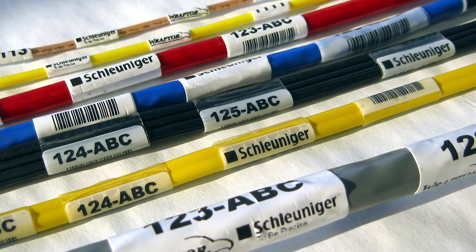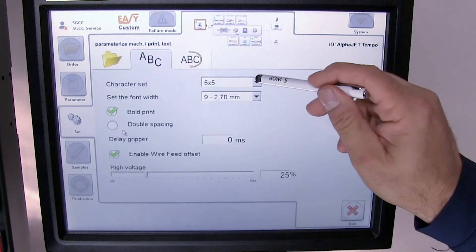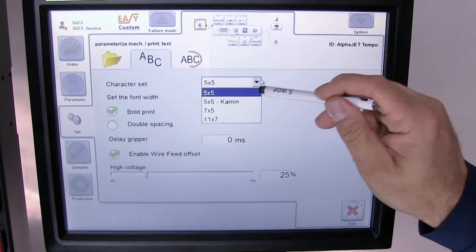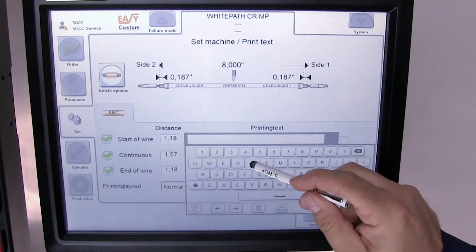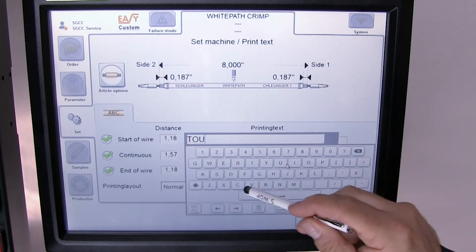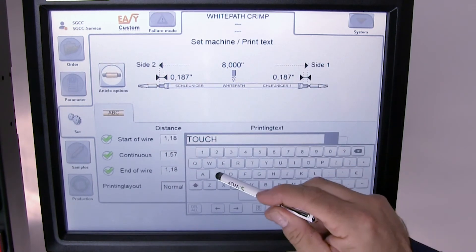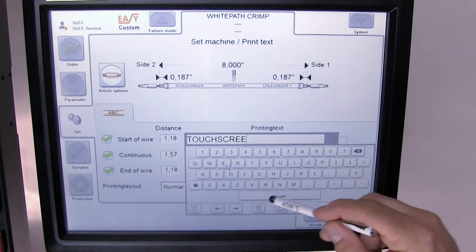Print location can be programmed directly into the crimp center easy operating software and for inkjet printing, text information can also be entered directly into easy, which eliminates the need and complication of programming the marking device separately and ensures easy, streamlined production.